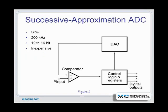Successive approximation converters are composed of a digital-to-analog converter, commonly called a DAC, a single comparator, and some control logic and registers. When the analog voltage to be measured is present at the input to the comparator, the system control logic initially sets all bits to zero. Then the DAC's most significant bit, or MSB, is set to 1, which forces the DAC output to one half of full scale. In the case of a 10-volt DC full scale system, the DAC outputs 5 volts.